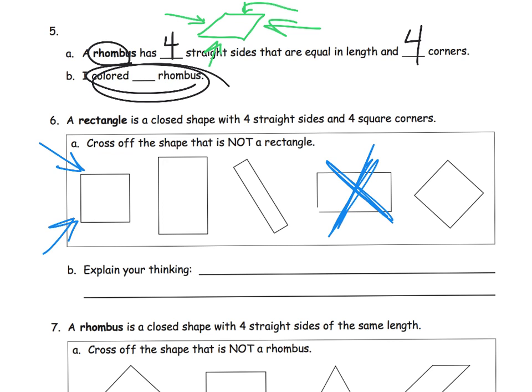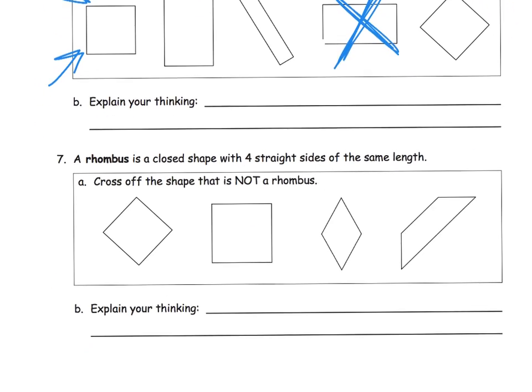So we're going to cross that guy off and that leaves everything else is a rectangle. Even this guy that looks like a square, that's a rectangle. Even this guy, a lot of kids might call that a diamond, but it's a square. So even those are called rectangles because a rectangle has to have four straight sides and four square corners.